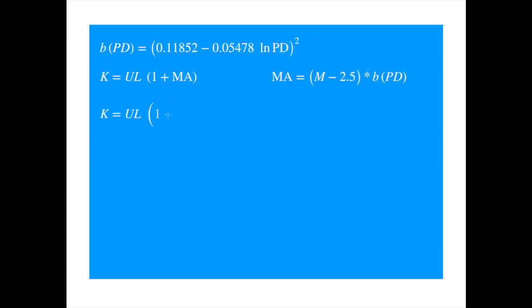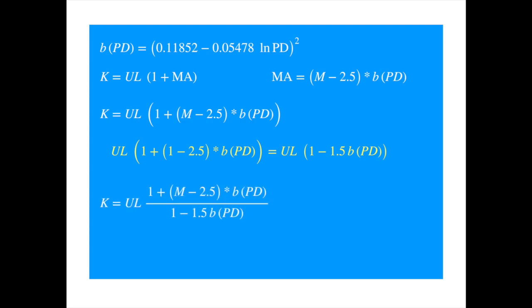Substituting for MA we get, for a maturity of one year this formula would give, but we want the maturity adjustment relative to one year so if we divide the above formula by this expression we get the formula which now gives a multiple of one for one year maturity, lower than one for a maturity of less than one year and higher than one for longer maturities and we have the Basel maturity adjustment formula.